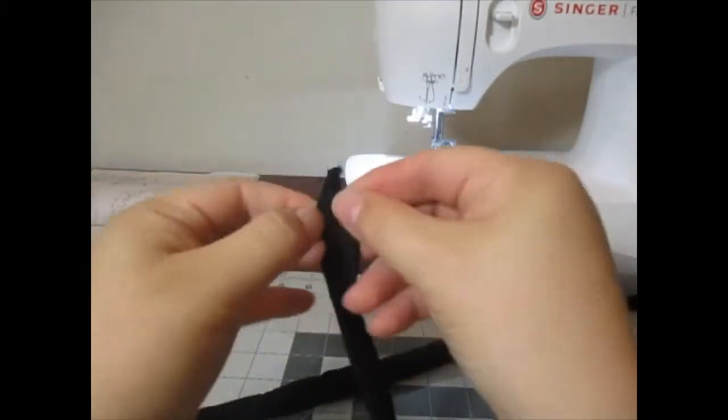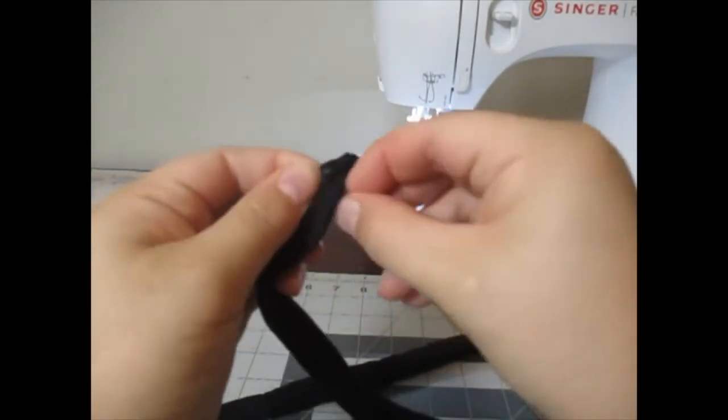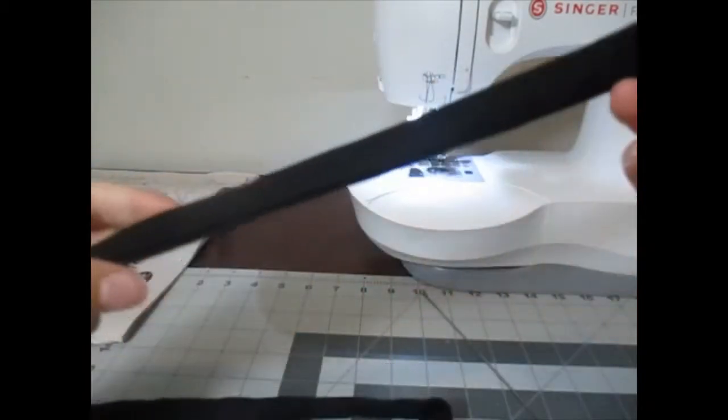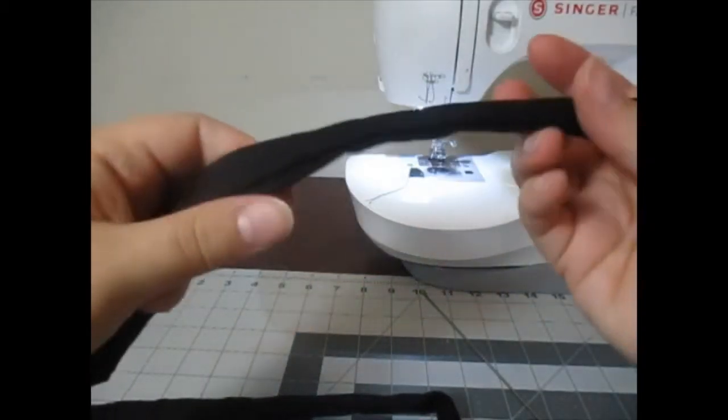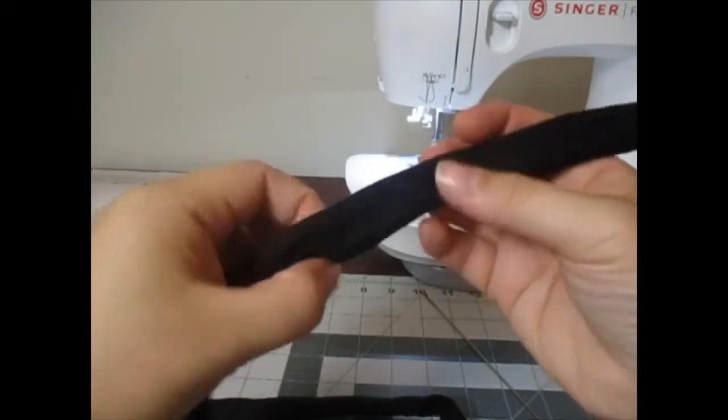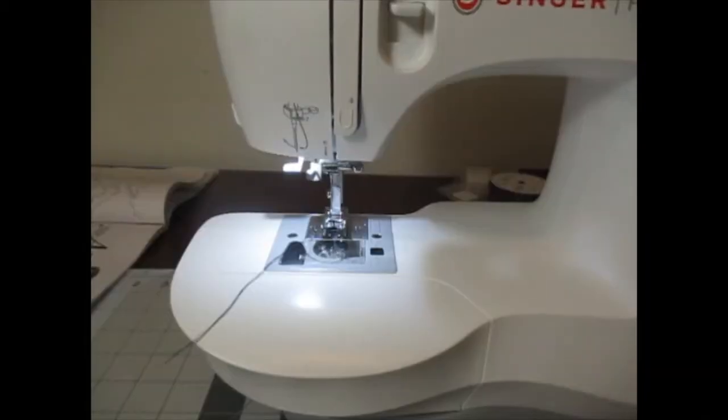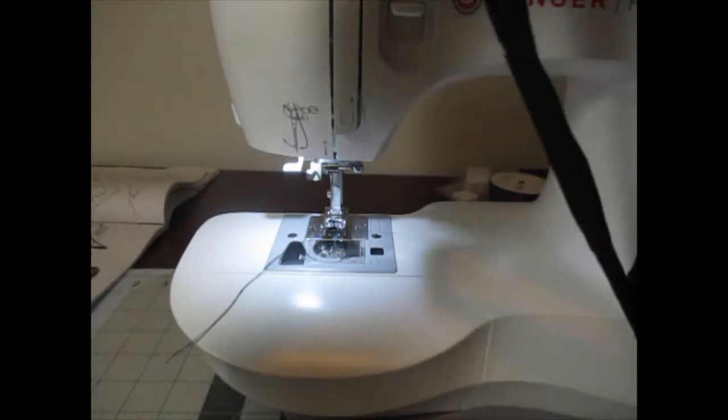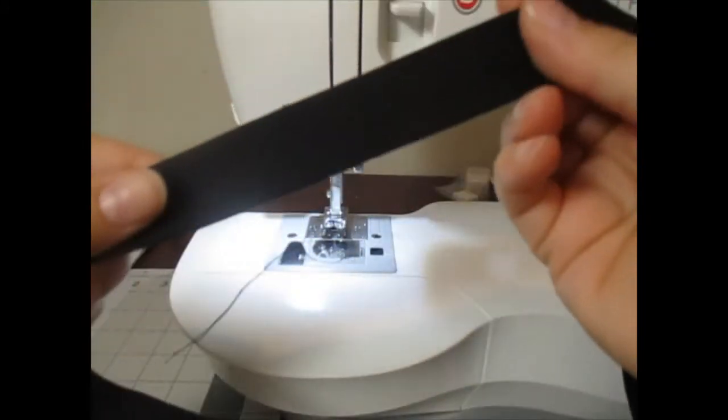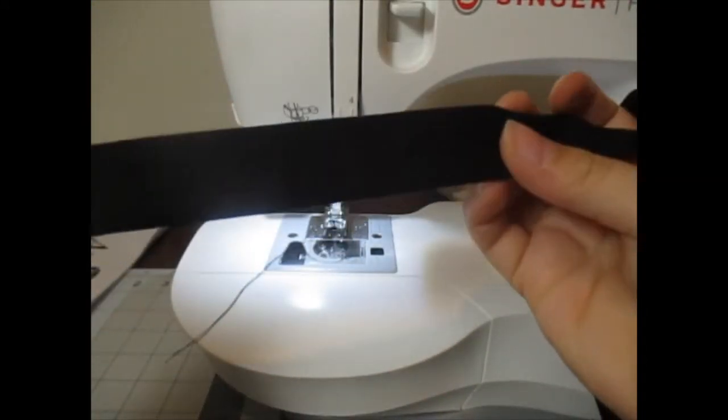Now what you're going to do is you're going to take this to your ironing machine and press it down completely flat. All right, so now that we have our strap completely pressed, it's nice and flat now.